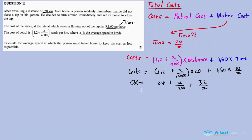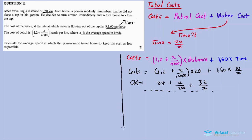So the total cost expressed in terms of x is C(x) = 24 + x/200 + 32/x. Now, to find the average speed that minimizes this cost, we need to optimize — so I need to find the first derivative.